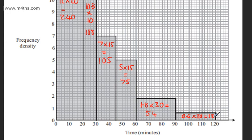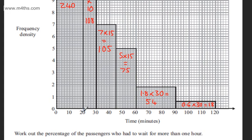So if we add all of these up now, I'm just going to write them out. We have 240, so let's write this out. We've got 240 plus 108 plus 105 plus 75 plus 54 plus 18.